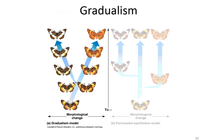The first idea is called gradualism. This is where you have a gradual change over time in a population — a slow and steady accumulation of genetic changes over time leads to bigger changes. Very subtle changes over time lead to larger changes, and this is one model of how evolution is thought to occur.